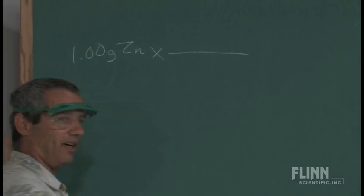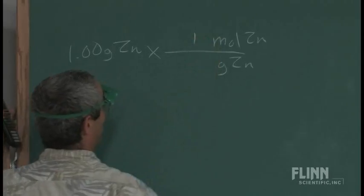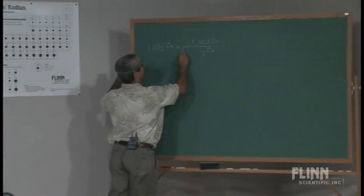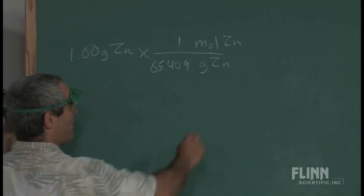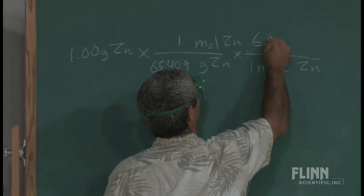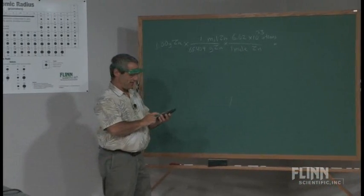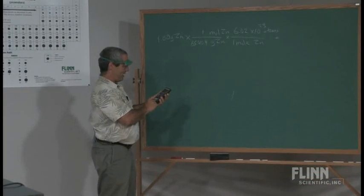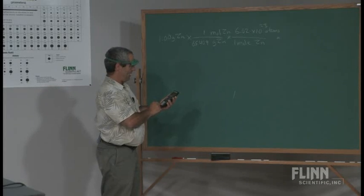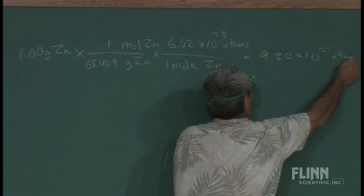I want to see their work in factor label form. They go from grams of zinc to moles of zinc, one mole of zinc. We consult the periodic table, 65.409. If I'm going to atoms, one mole of zinc, good old 6.02 times 10 to the 23rd atoms. They do that calculation: 1 divided by 65.409, and then times 6.02 EE23. There were 9.20 times 10 to the 21st atoms of zinc in there.